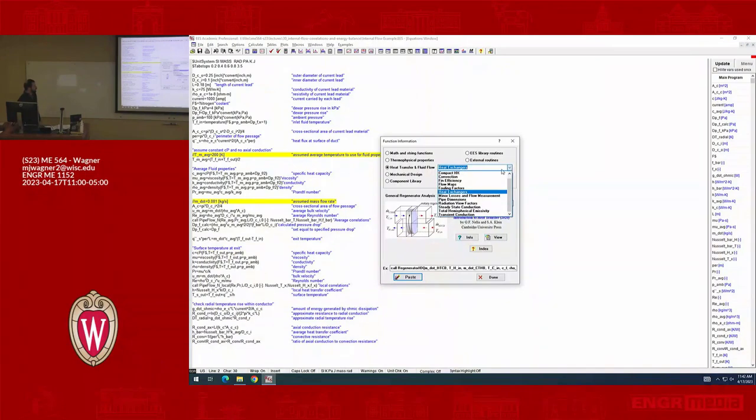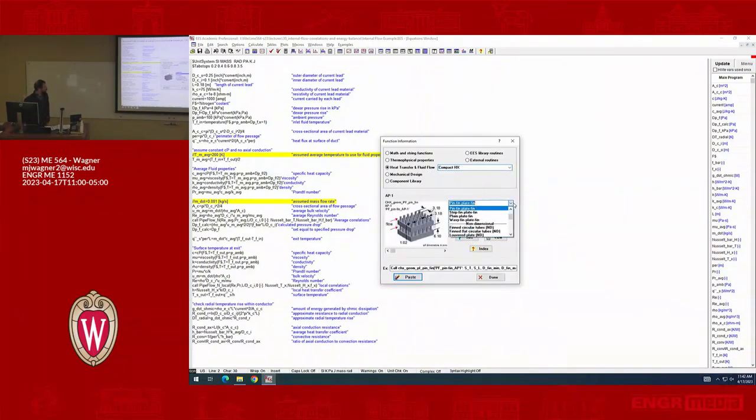If we look at the compact heat exchangers, this is where you're going to get specific conductance relationships. What's coming out of this are parameters that are going to help us estimate the performance, the conductance of this. So you have flow, you have these pin fin, plate fin heat exchangers.